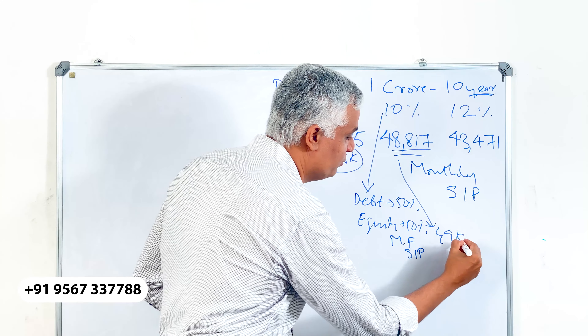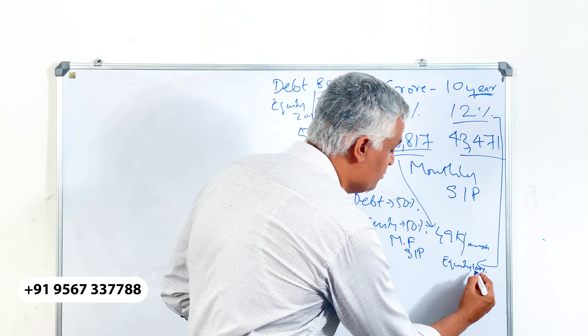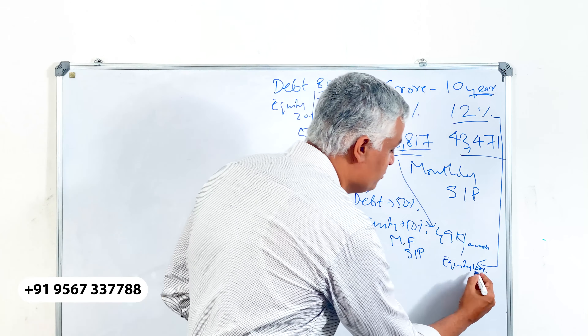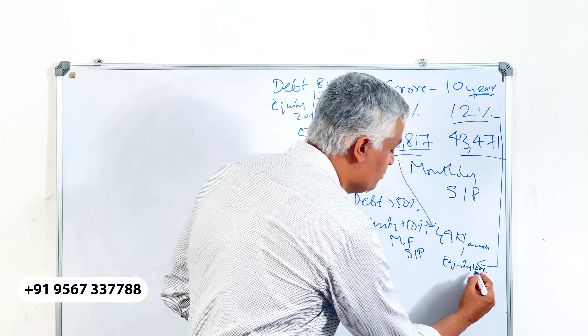If you are ready to take a little more risk, you can allocate about 50% to debt and 50% to equity. You can invest in mutual fund itself on an SIP mode. In that case, if you invest about 49,000 rupees per month, you will be able to accumulate 1 crore rupees in 10 years time.